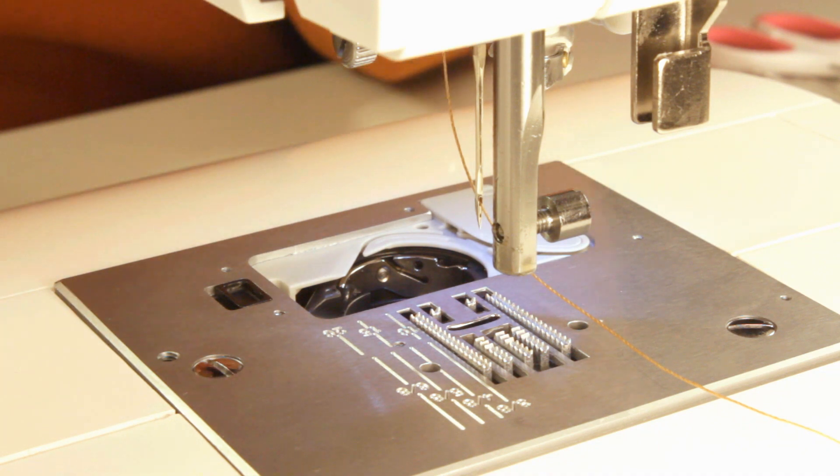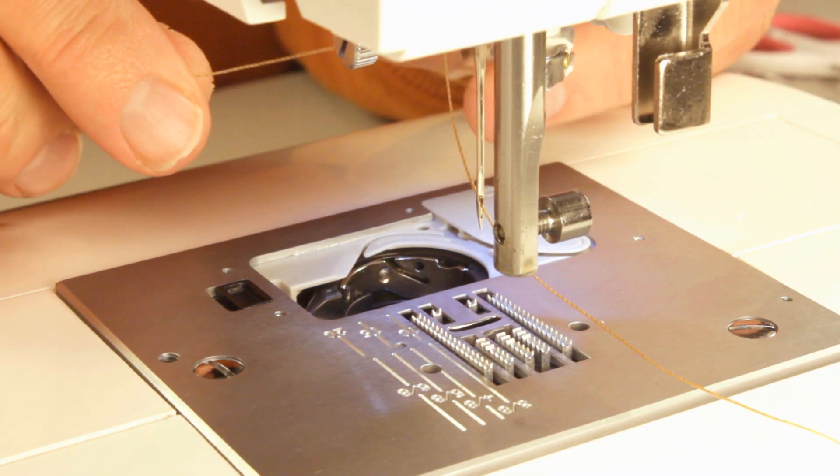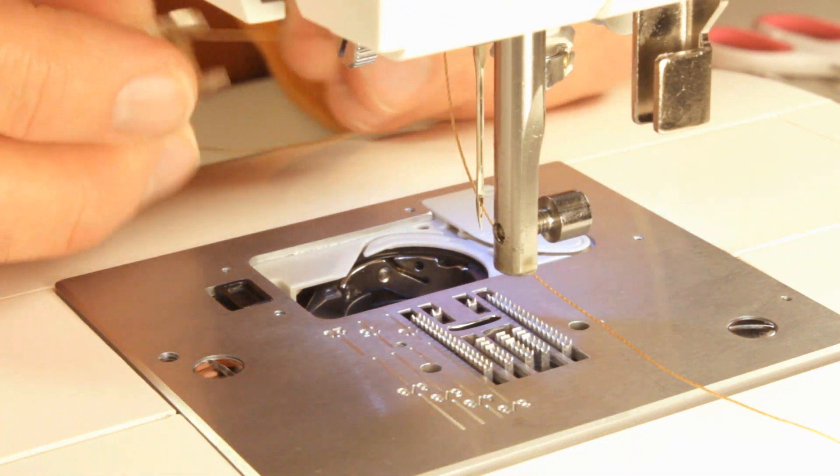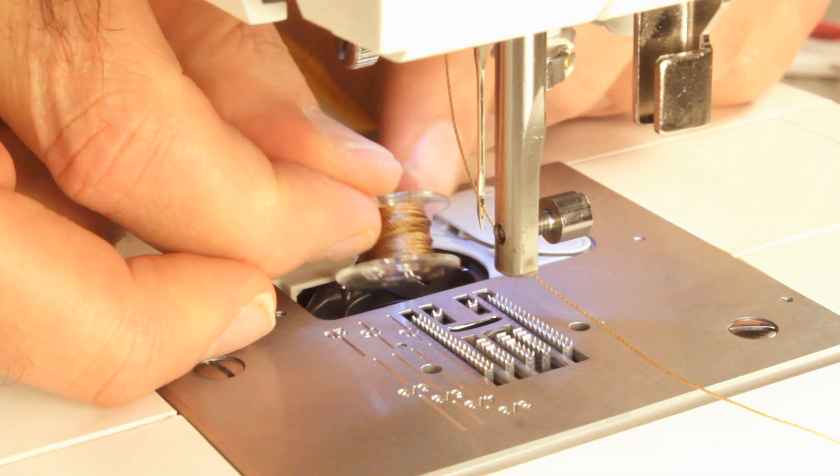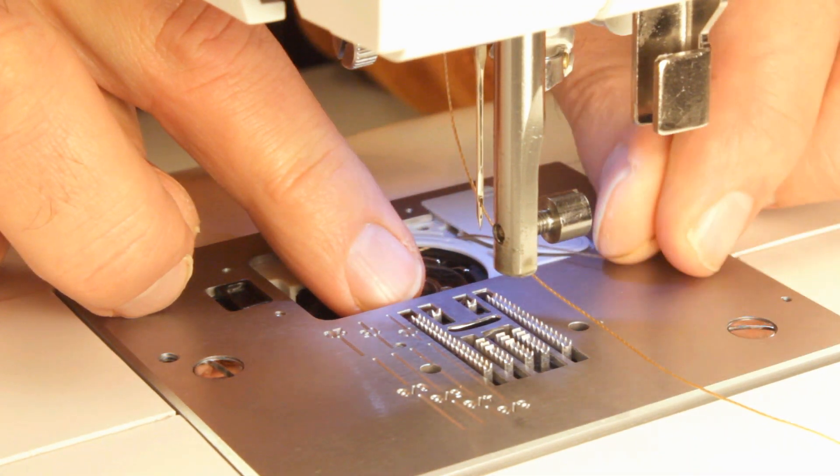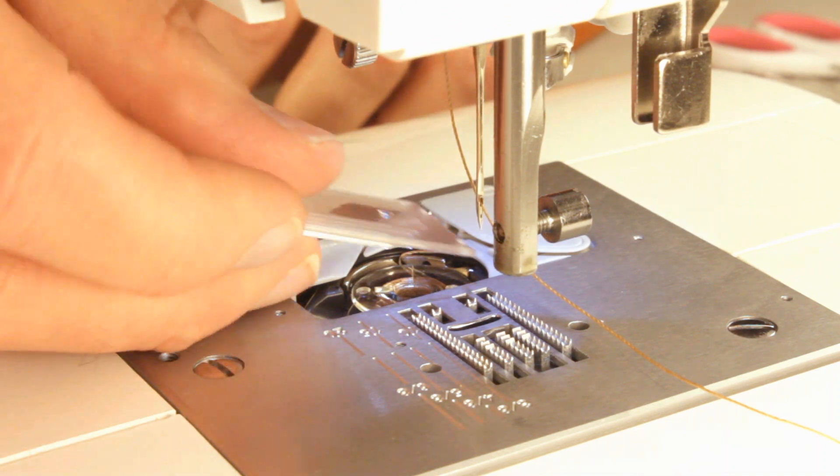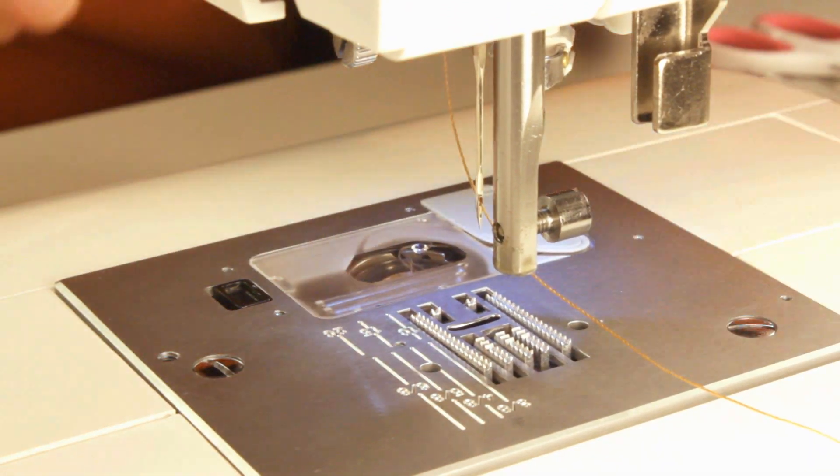Now, we've got the upholstery weight thread. We've got it threaded through the needle. We're going to show you the same thread down here in the bobbin. Once again, we drop our bobbin in. We pull the thread around, come through the cutter, cut the thread. Put our case cover on.